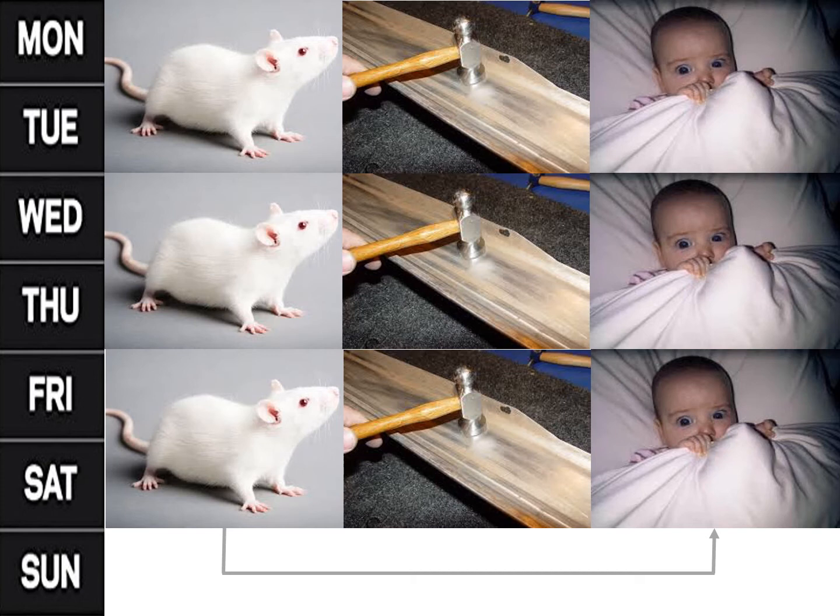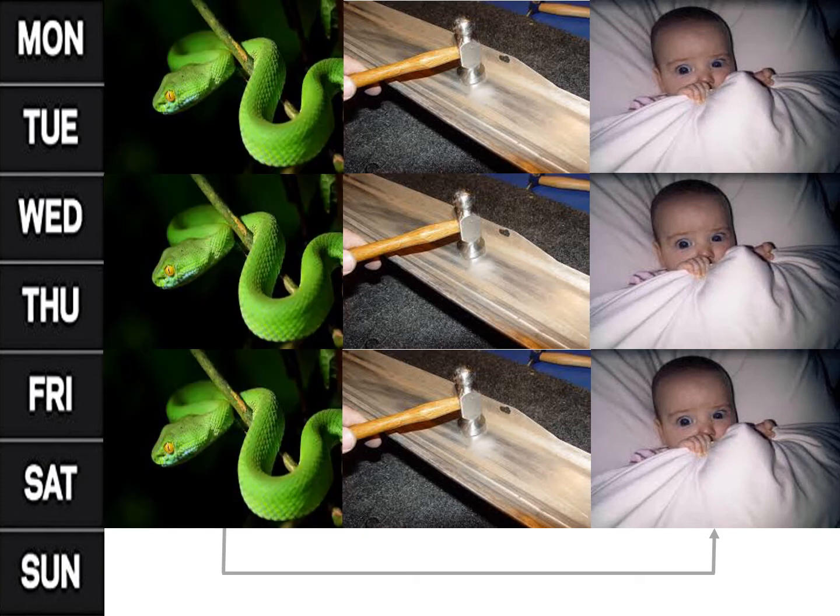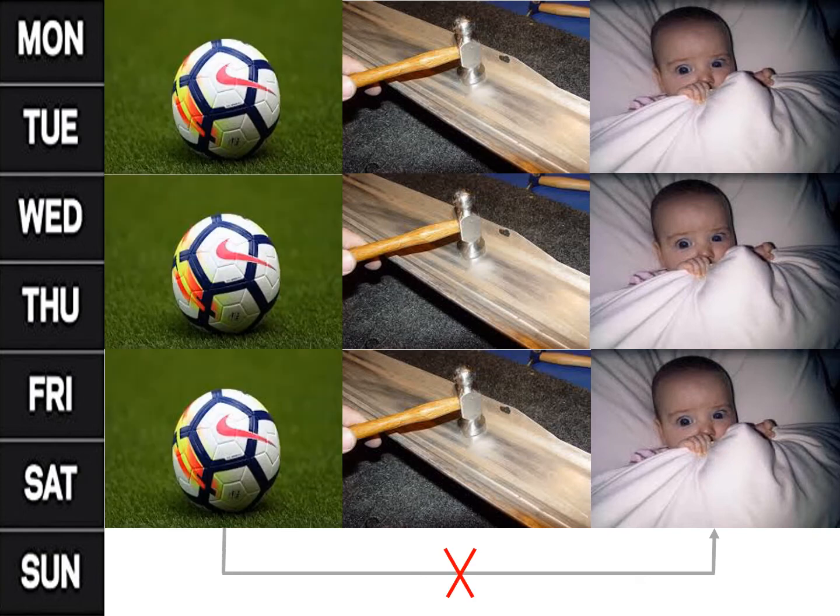Second, people and some animals can be conditioned to develop fears of some objects more rapidly than other objects. For example, if people watch a snake and then hear a loud noise, and this sequence is repeated three times, they might develop a fear of snakes. In contrast, if people watch a ball and then hear a loud noise three times, they might not develop a fear of balls.